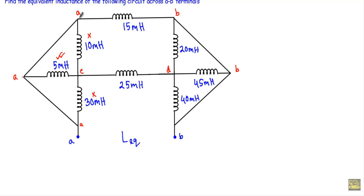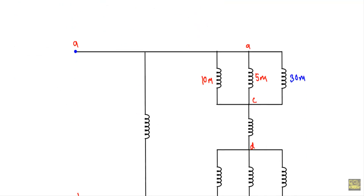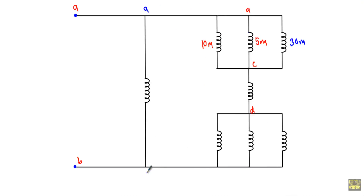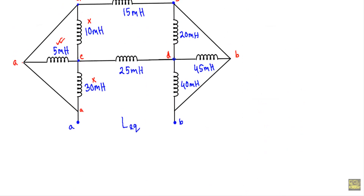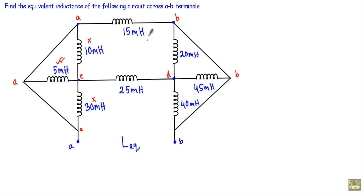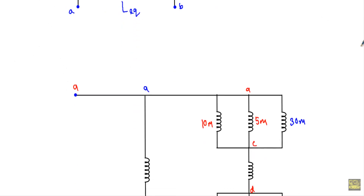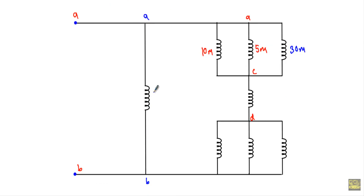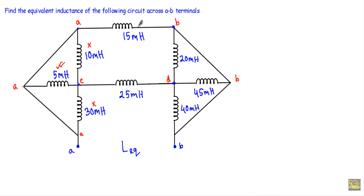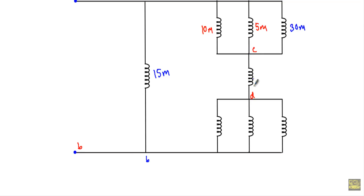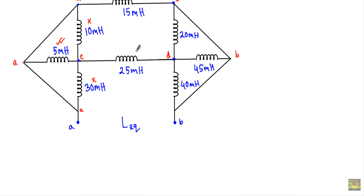Now I will go from point A to point B, and from point C to point D. Going from point A to point B, I will encounter this 15 mH inductor — so between A and B I get this 15 mH inductor. Going from point C to point D, I will get this 25 mH inductor. So I have covered this 25 mH inductor.